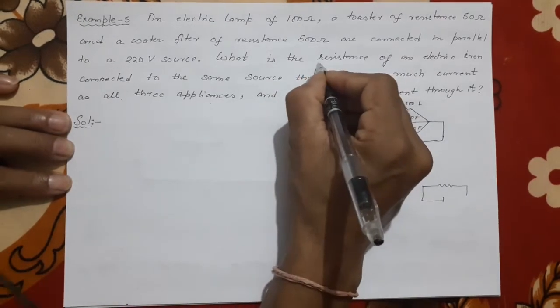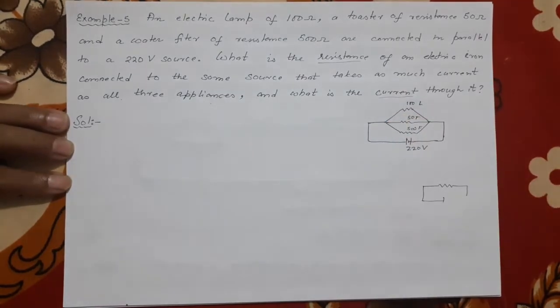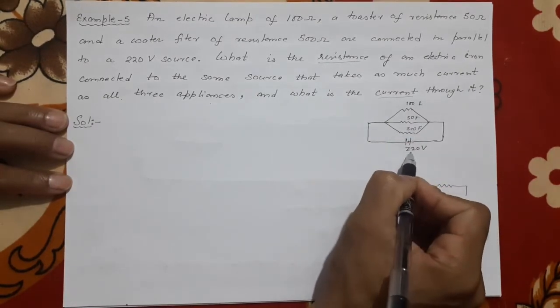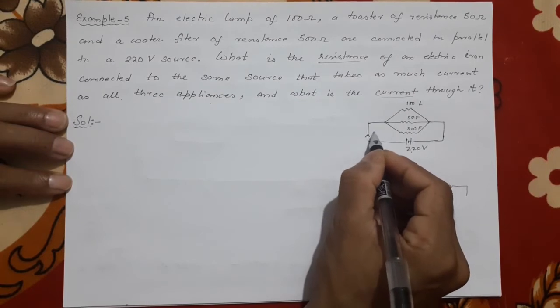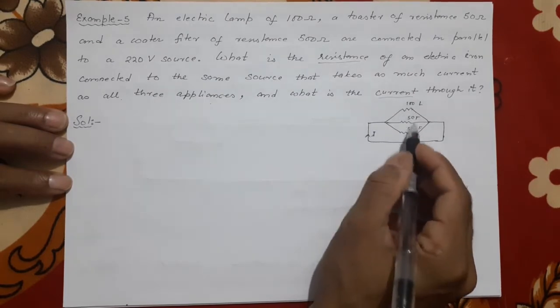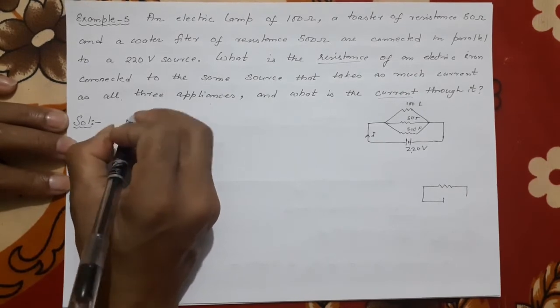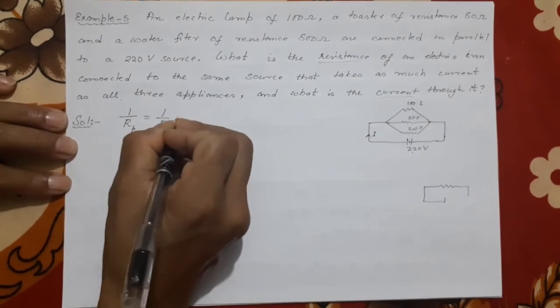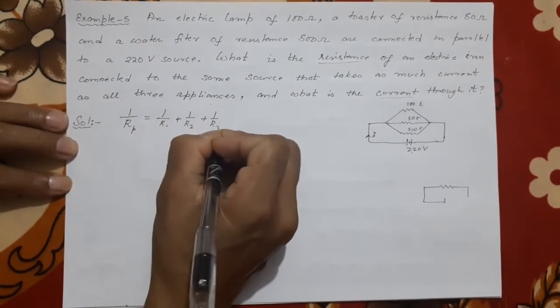So let us try to understand this question. You have to find two things: what is the resistance and what is the current. First you will get current, but in the answer, to find the current here what you need? Voltage already there. We need current here. How to get that current? By getting the resistance. So Rp: 1/Rp is equal to 1/R1 + 1/R2 + 1/R3.